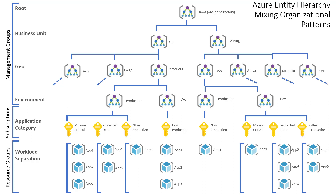This provides you with the flexibility to create a hierarchy that combines several organizational patterns to meet your needs. For example, this diagram shows an organizational hierarchy that combines the business unit pattern, the geographic pattern, the environment pattern, the application category pattern, and the workload separation pattern. But beware — this is probably more complexity than you need. You should design a hierarchy that provides the scaffolding you need to grow, but without unnecessary complexity. Think in terms of the minimum viable product or MVP to provide the framework you need for the foreseeable future without too much complexity.